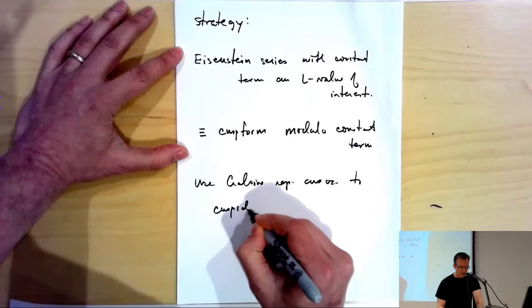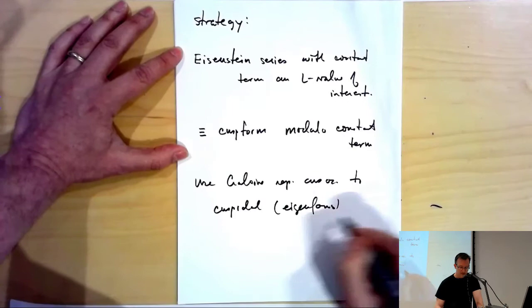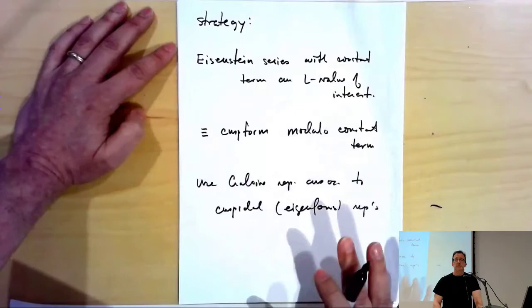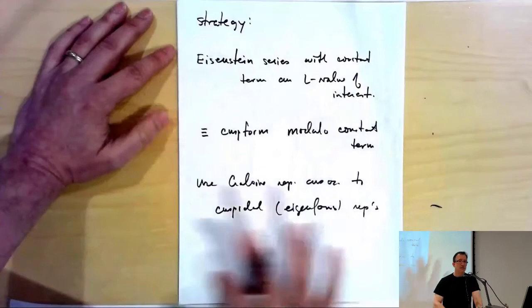That strategy worked very well to prove the classical Iwasawa main conjecture and was exploited and carried out by Wiles to prove the classical Iwasawa main conjecture over totally real fields.